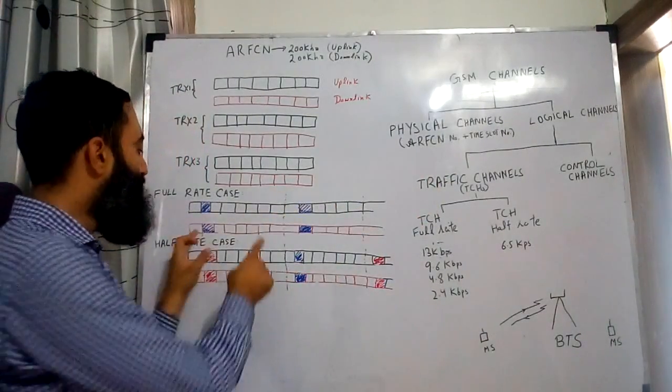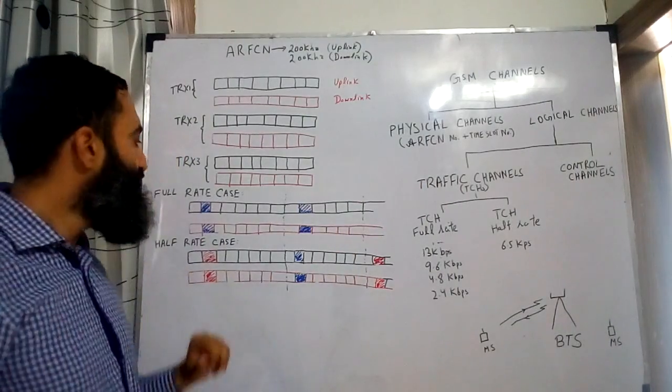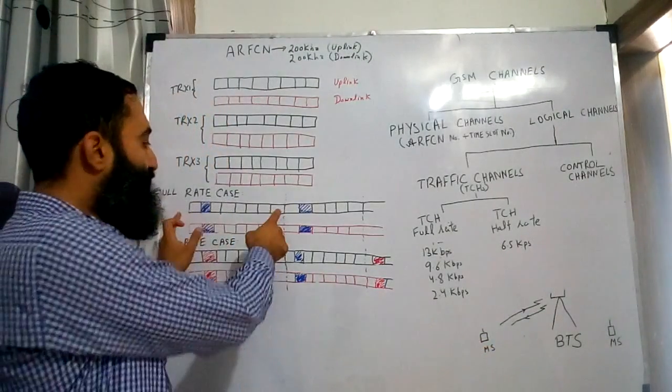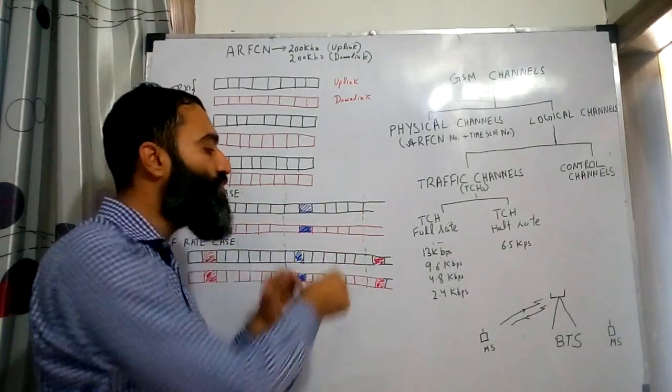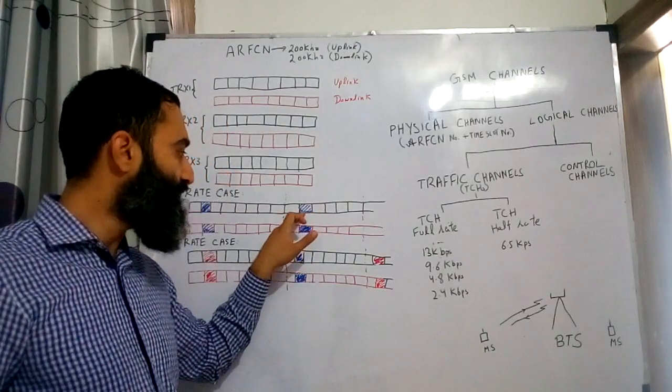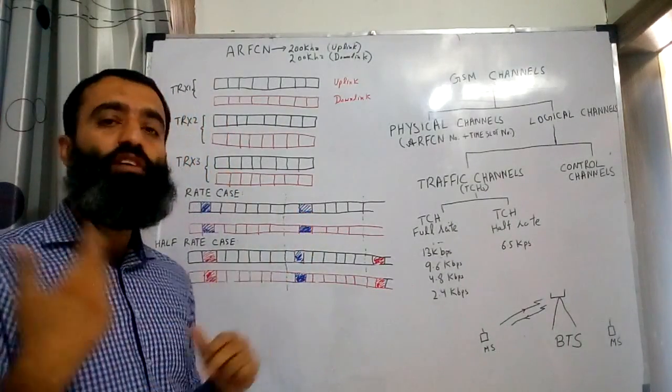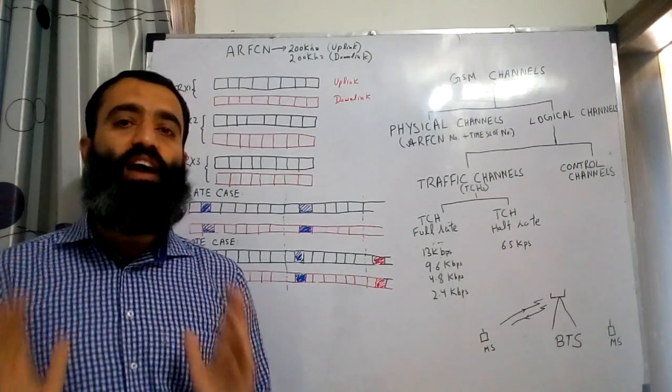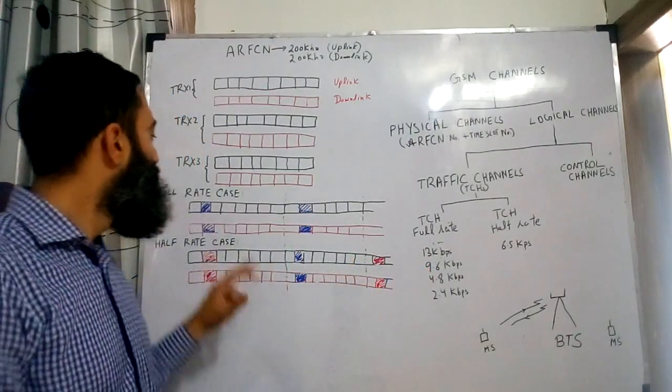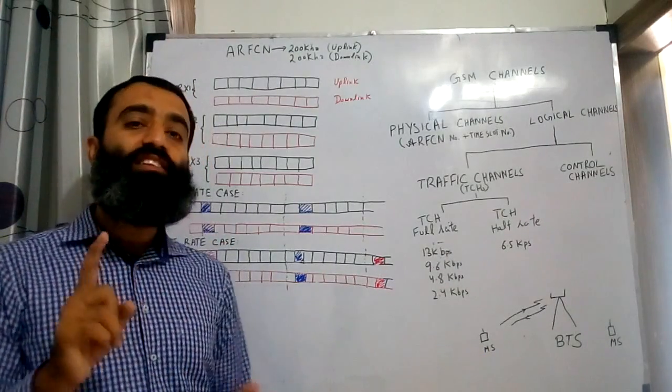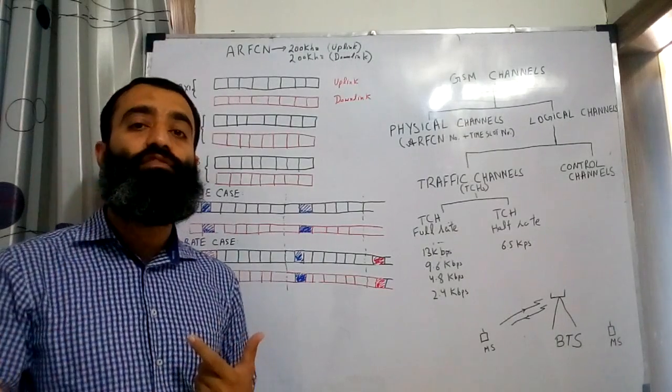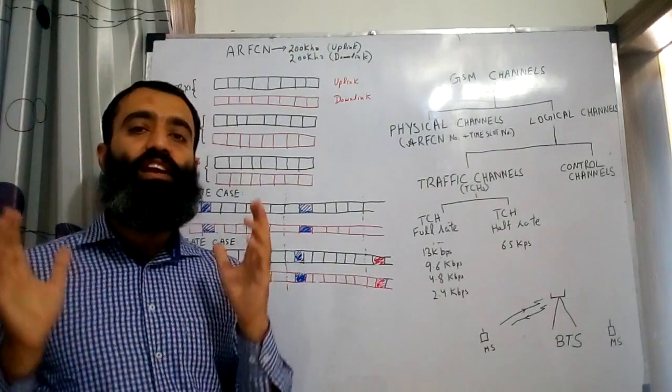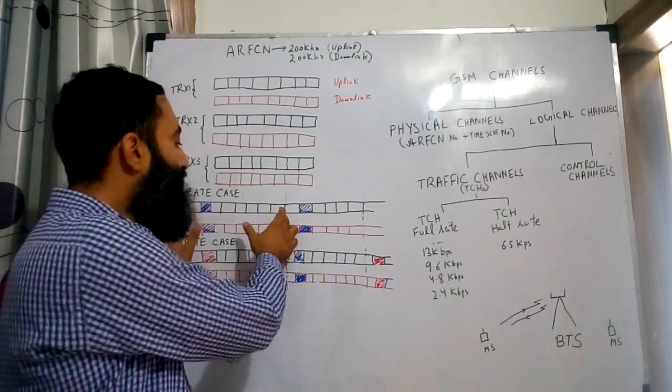Now if I assign, for example, time slot number 2 to this user in this frame, in frame number 1, in frame number 2 I also assign this time slot to this user, and this time slot remains assigned during the duration of the call to this mobile station. Then this configuration is known as the full rate configuration of the TCH channel. In this way, as you can see, we can assign up to 8 users in a frequency.